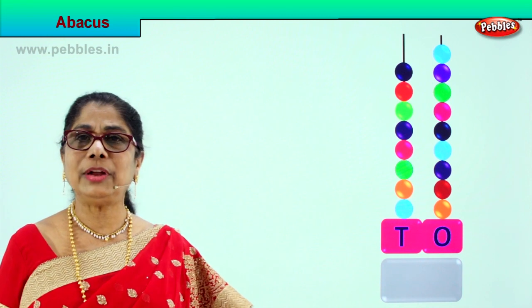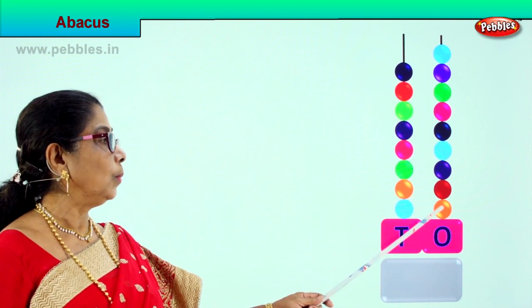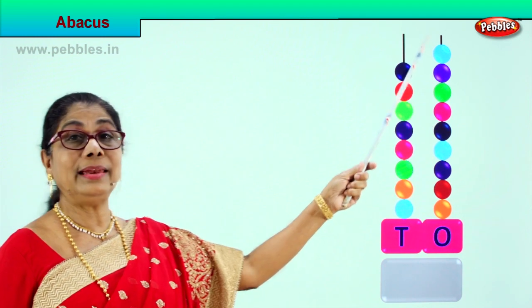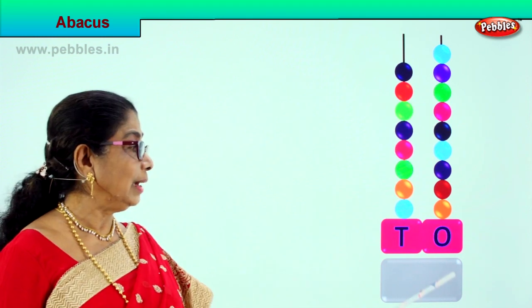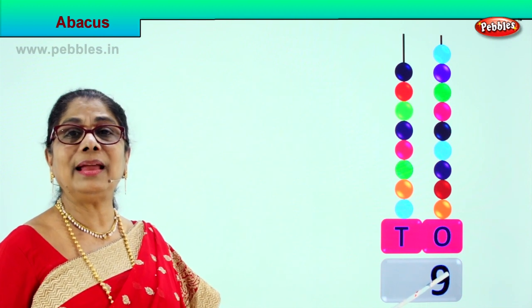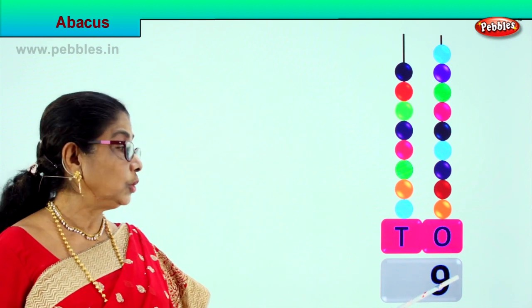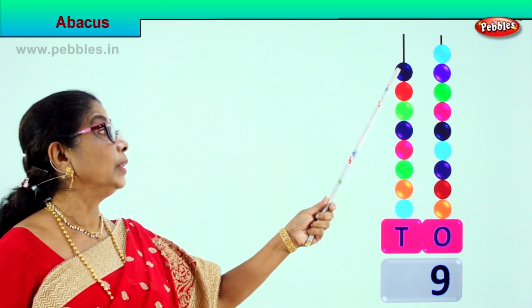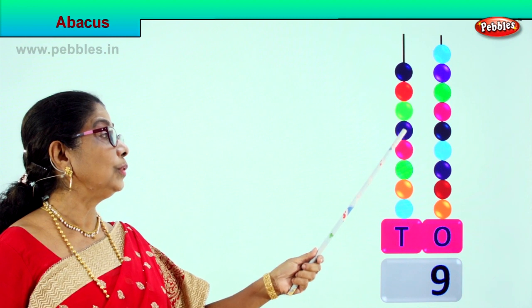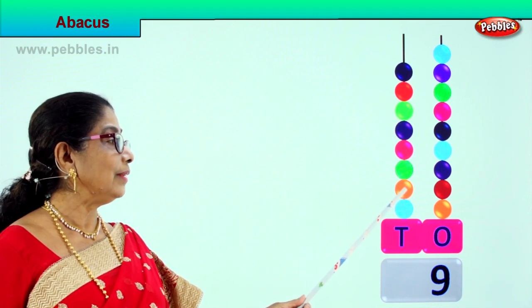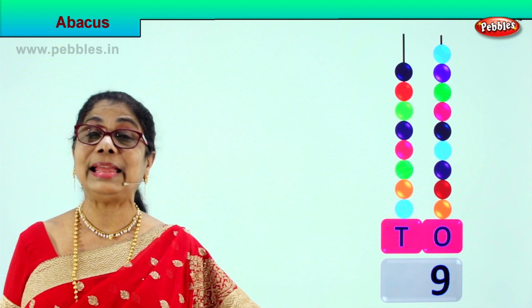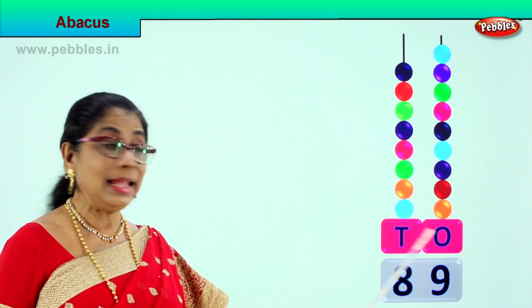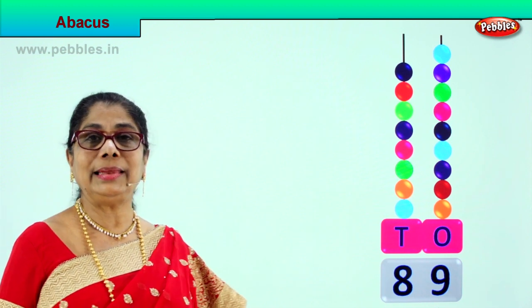Let's count all the beads in the ones place: 1, 2, 3, 4, 5, 6, 7, 8, 9. So we write 9 in the ones place — there are 9 ones. Now we go to the tens and count: 1 ten, 2 tens, 3 tens, 4 tens, 5 tens, 6 tens, 7 tens, 8 tens. So we write 8 here — 8 tens is 80. 8 tens and 9 ones: 89.